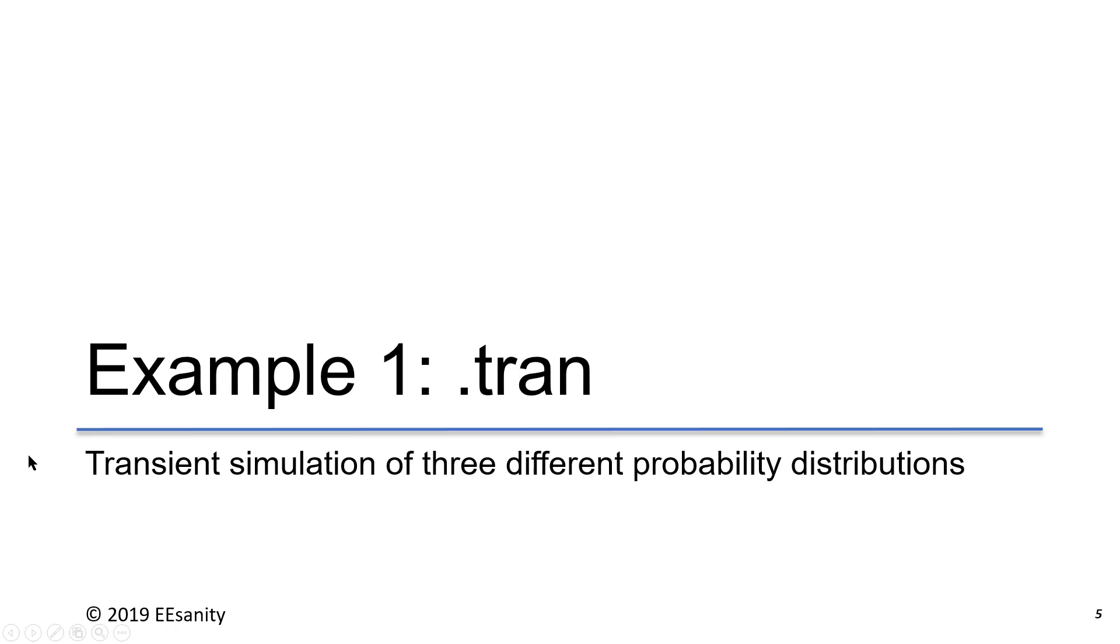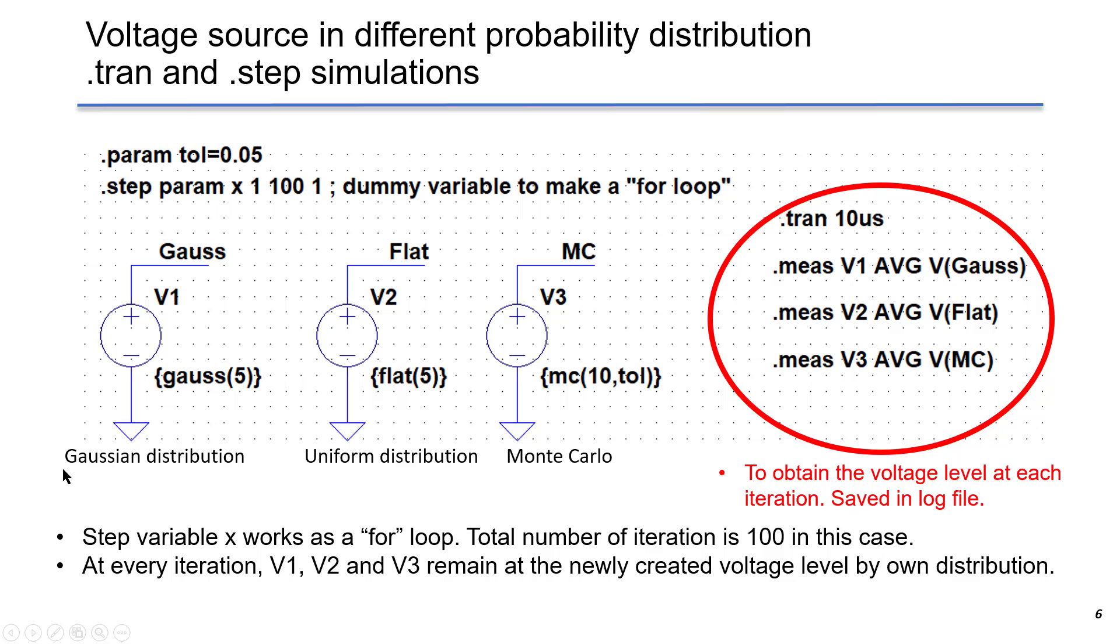The first example is a transient simulation of three different probability distributions in LTSPICE. We use transient simulation dot TRAN. This is a schematic capture in LTSPICE. So we define three different voltage sources using Gaussian, flat, and Monte Carlo distribution.